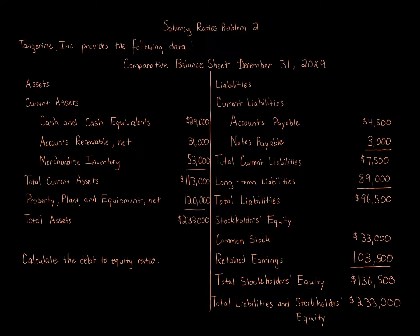Solvency Ratio Problem 2. Tangerine Inc. provides the following data — a comparative balance sheet on December 31st, 20x9. Assets: current assets include cash and cash equivalents $29,000, accounts receivable net $31,000, merchandise inventory $53,000, for total current assets of $113,000. Property, plant and equipment net $120,000, for total assets of $233,000.